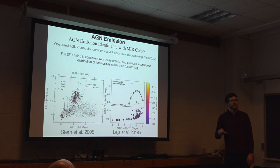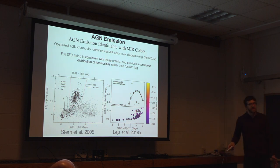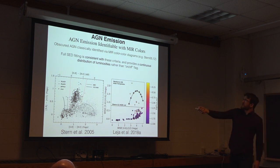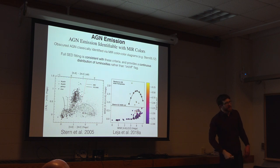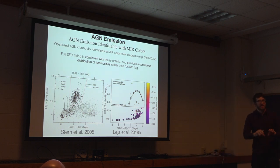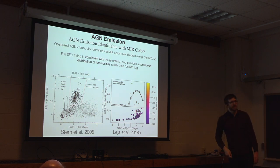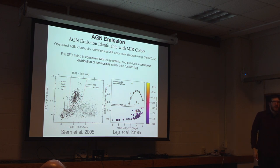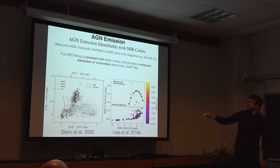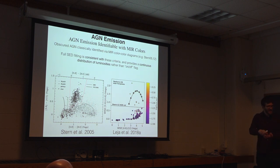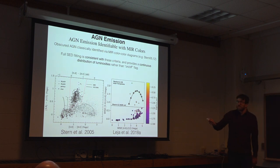Luckily, AGN tend to heat dust to much higher temperatures than star formation, and that produces very distinct mid-infrared colors. It's been known for a long time that if you plot these mid-infrared color-color diagrams, AGN fall somewhere very different than star-forming galaxies. You can use those different colors to identify galaxies which are dominated by AGN emission. Going a step further, if you fit a full model to the SED, you can assign probabilistic categories and say this galaxy probably has X percent AGN contamination, with a good error bar.